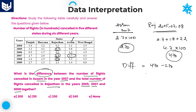Guys, remember whenever you are calculating the difference of any two numbers, always take the highest number minus the lowest number. 470 minus 270 which is equal to 200 — the difference between number of flights cancelled in Assam 2007 and Rajasthan in years 2005, 2007, and 2008 together. That is option A.